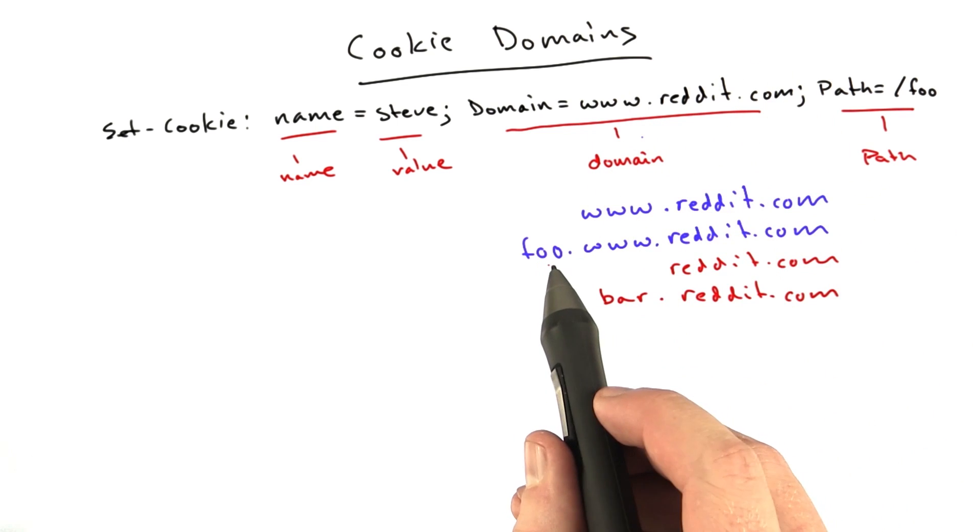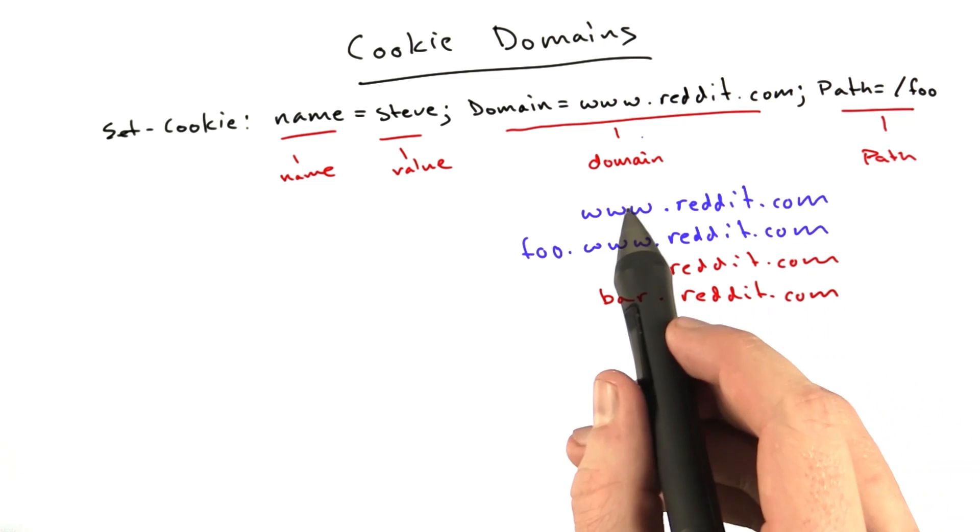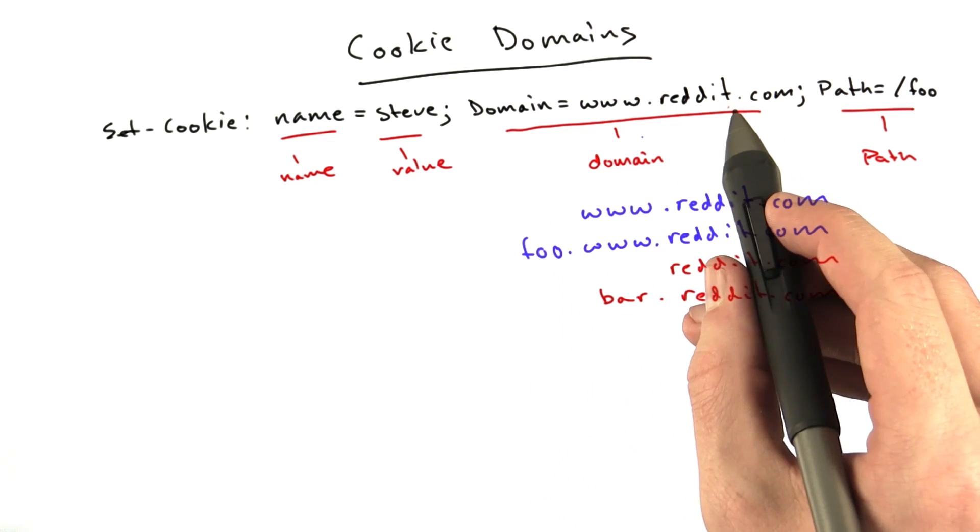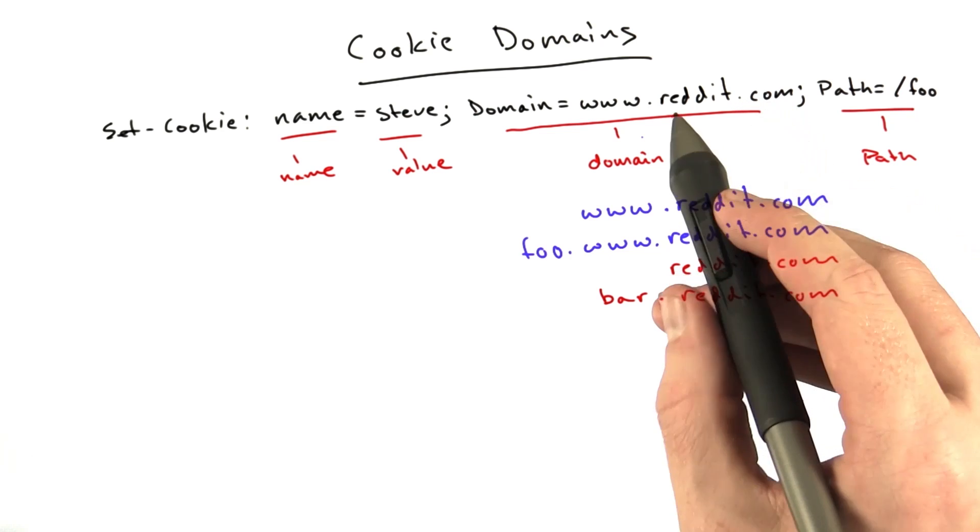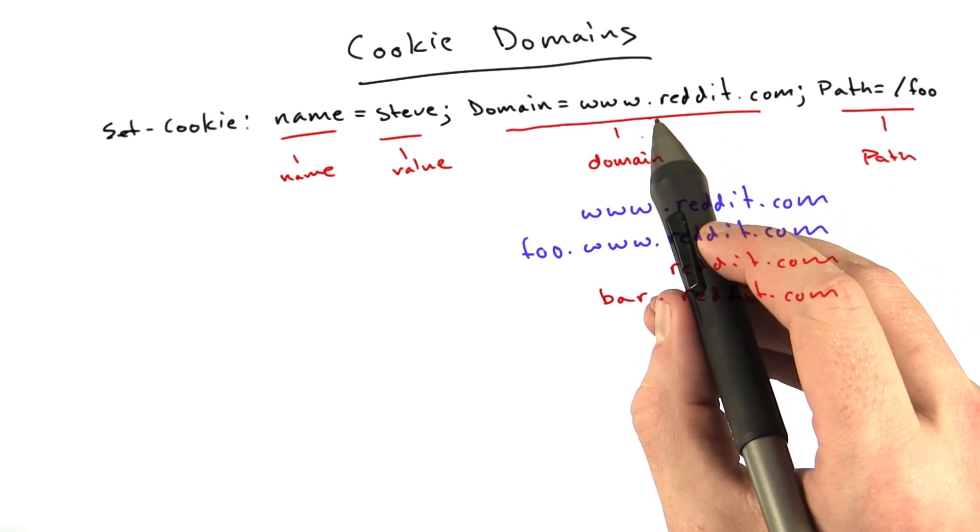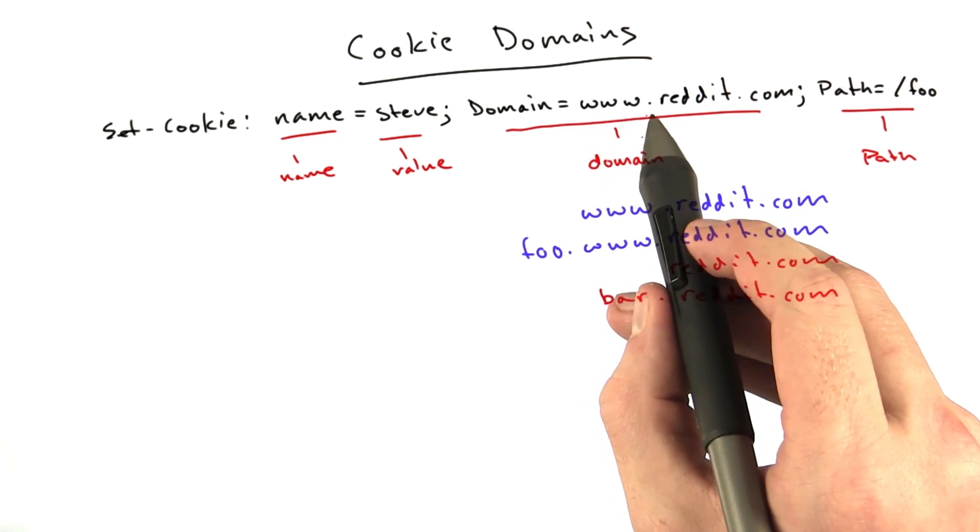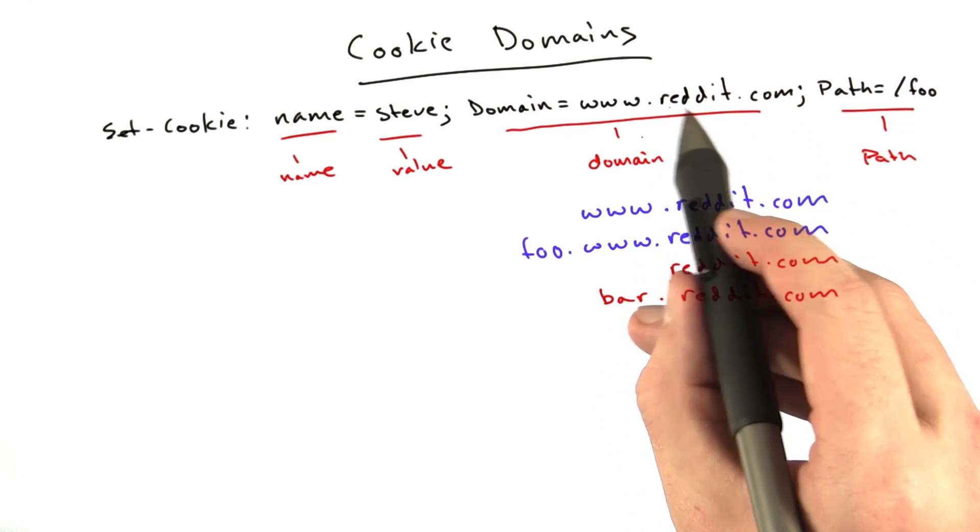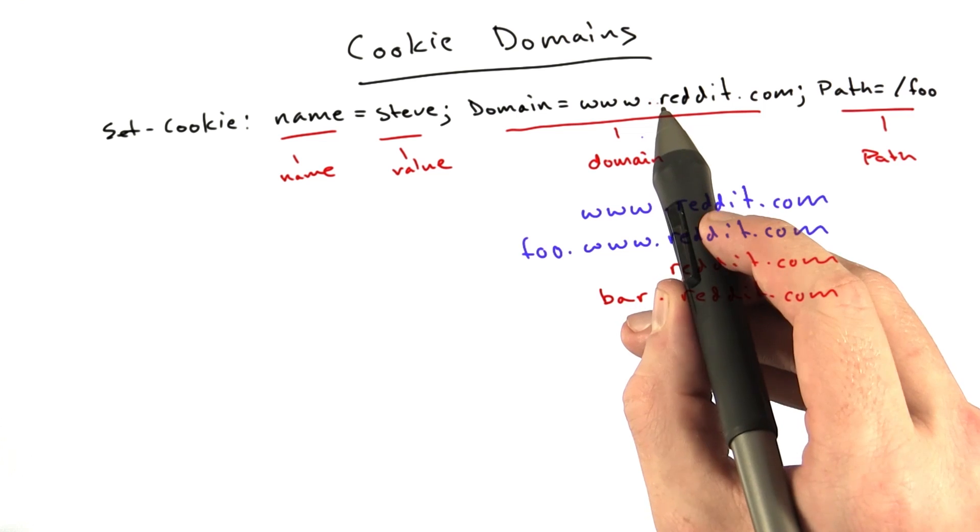So basically the site you're at has to end with www.reddit.com. You can't set cookies to just .com—you have to have at least two periods. So the minimum domain you can set a cookie for is .reddit.com. If you try to set for just reddit.com, that first period will automatically get added.